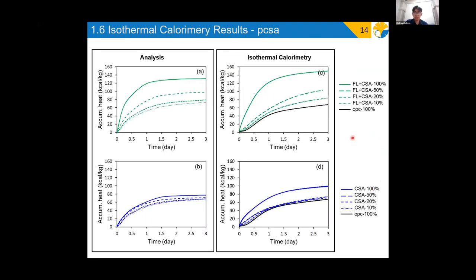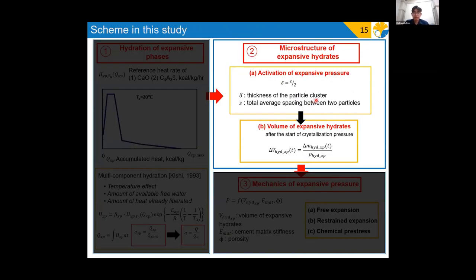But nonetheless, based on the accumulated heat from isothermal calorimetric experiment and the results given by the model, they seem to have some fairly good agreement as a starting point. Thus, as stated previously, preliminarily this model is taken for computing various parameters such as hydration degree and the amount of expansive hydrates for the subsequent model to calculate the pressure.